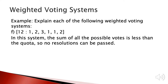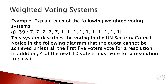In this system the quota equals 12 but the sum of all possible votes is less than the quota, so no resolution can be passed. In another example, the quota is 39 and the first five voters have 7 votes each, giving a total of 35 votes for the first five. To pass a resolution, all five must vote for pass, and in addition four of the remaining ten voters must also vote for pass.